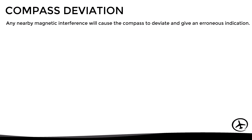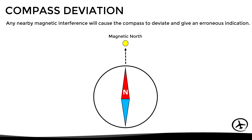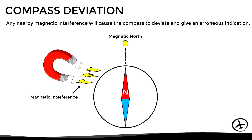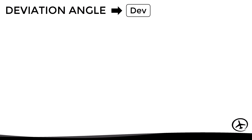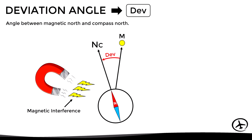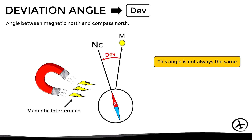There is one more concept we need to look at: compass deviation. Any nearby electromagnetic interference will cause the compass to deviate and give an erroneous indication. Ideally the compass points directly to magnetic north, but a nearby magnetic interference can cause the needle to deviate and point to a new north. This new north is known as compass north, abbreviated as NC. The resulting angle is called the deviation angle, defined as the angle between magnetic north and compass north.